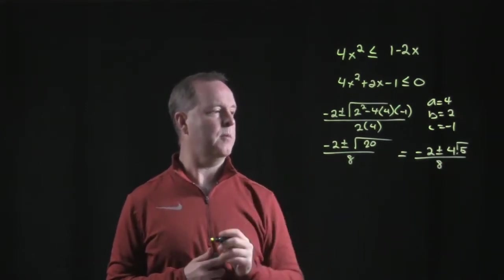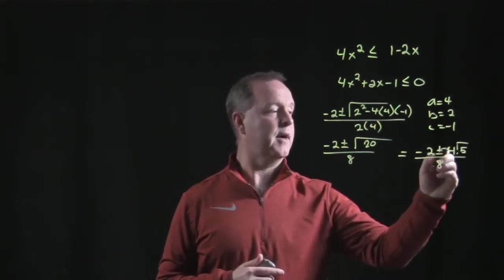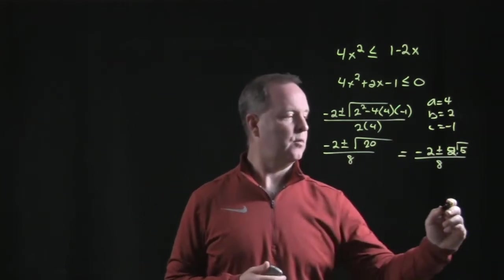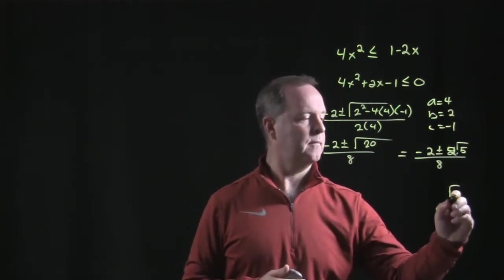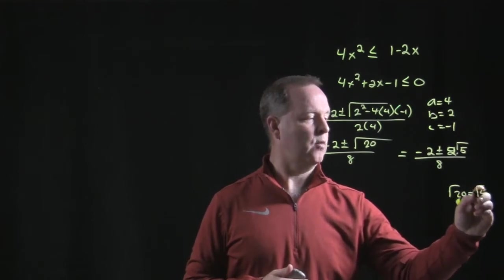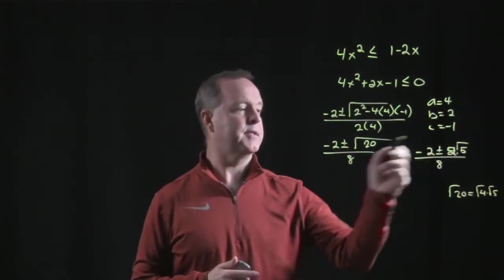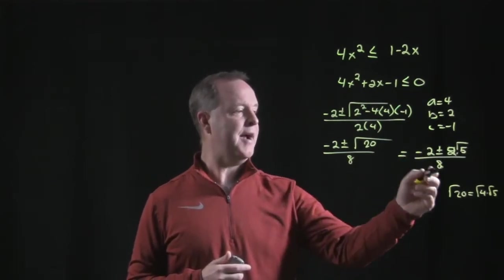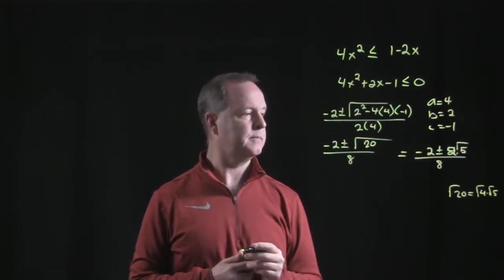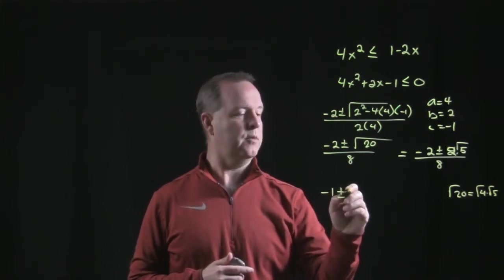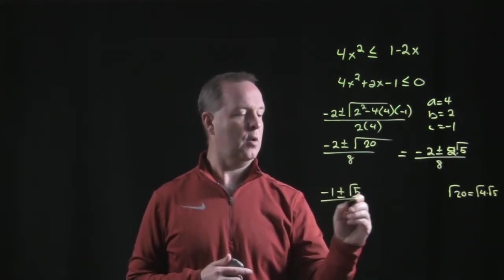Root 20 is the same thing as root 4 times root 5. Root 4 becomes a 2, so that's 2 root 5. I can factor out a 2 out of each of those terms. So I'm left with negative 1 plus or minus root 5 all over 4.